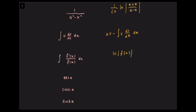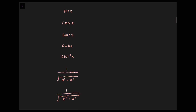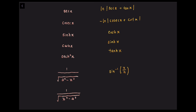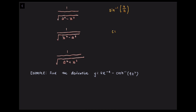Integrating sec x, we have ln of |sec x plus tan x|. Integrating cosh x, we have sinh x. Integrating sinh x, we have cosh x. Integrating sech squared x, we have tanh x. Integrating 1 over the square root of a squared minus x squared, we have inverse sin of x over a. Integrating 1 over the square root of x squared minus a squared, we have inverse cosh of x over a. And integrating 1 over the square root of a squared plus x squared, we have inverse sinh of x over a.